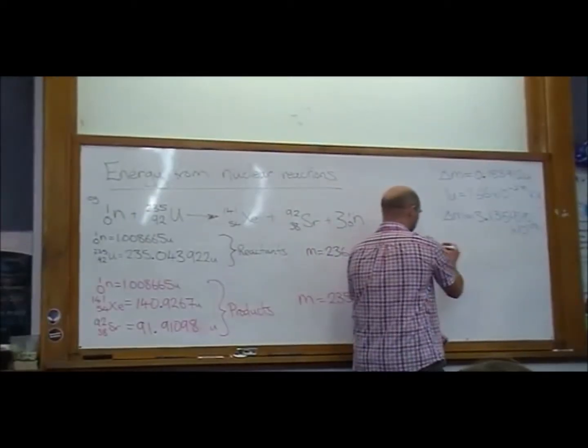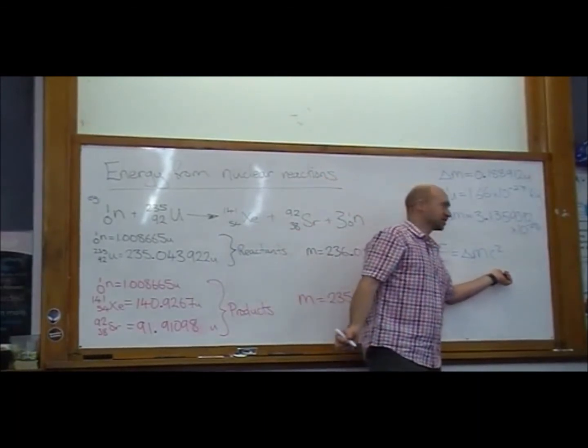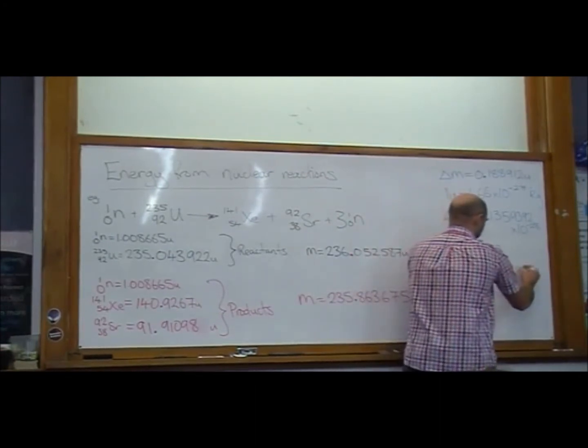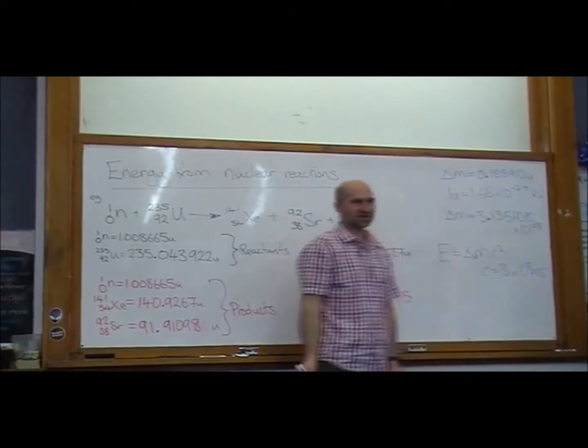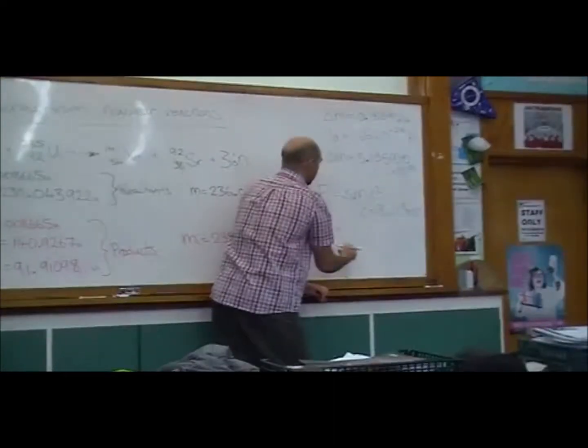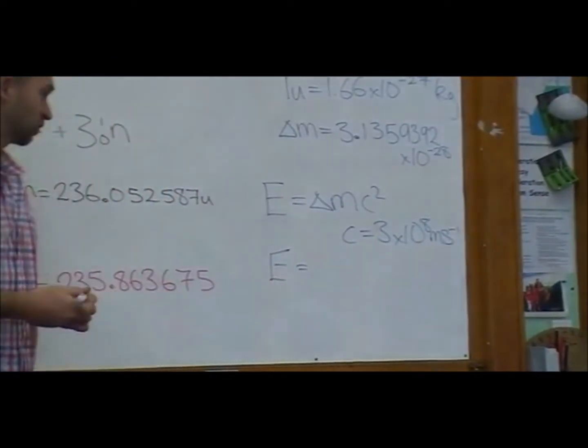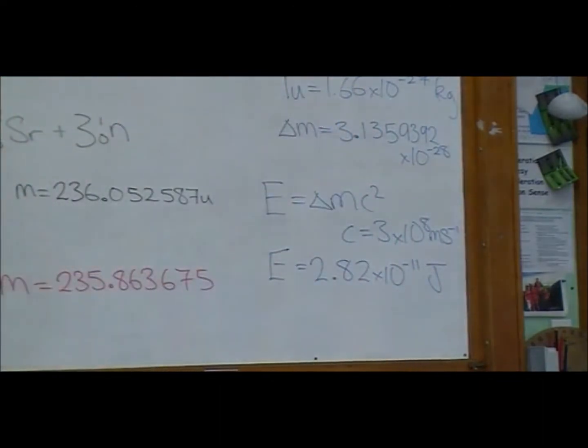So we're going to calculate the energy. Energy is the change in mass times the speed of light squared, and the speed of light is 3 times 10 to the 8 meters per second. So our energy is going to be that number times by 3 times 10 to the 8 squared. So we get 2.82 about times 10 to the negative 11 joules.